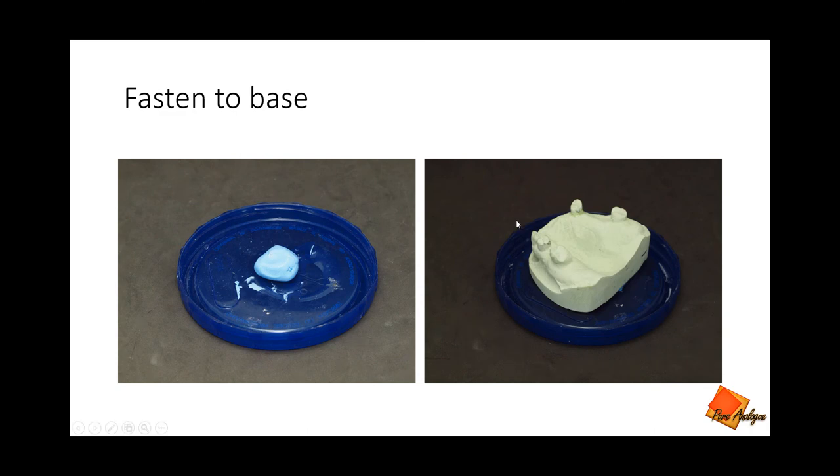Then you have to fasten your model to the base because when you start to pour the silicone, you don't want it to float or drift. What I did was I took one part of the two-part GC LT Putty and put a little ball down here. It's sticky and tacky, then I just take my model and press it down on top of that, and that'll fixate the model to the inside of the lid so it won't float when you pour.